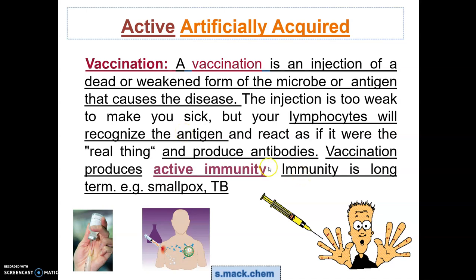On first exposure to the antigen in the form of the vaccination, antibodies are produced. On second exposure to the same antigen, your body produces an active immunity because more antibodies can be made in response to the same antigen such that you do not develop symptoms of the disease. Can you state any vaccinations you have received and whether you have actually developed any of those diseases?